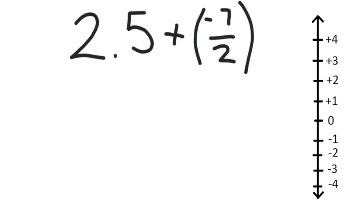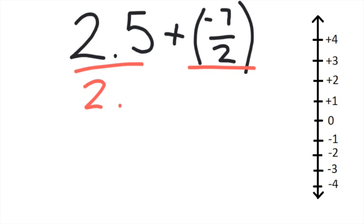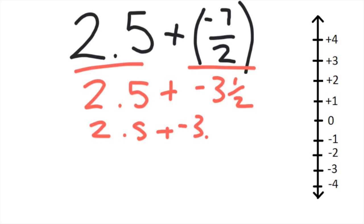Here we have two and a half plus negative seven halves. Here we have a decimal and here we have a fraction. Let's change them both so that they're the same. A lot of people like to do decimals because they seem easier. So we've got two and a half plus — negative seven halves is the same as negative three and a half — so we can write this as two and a half plus negative three point five. Now let's estimate.